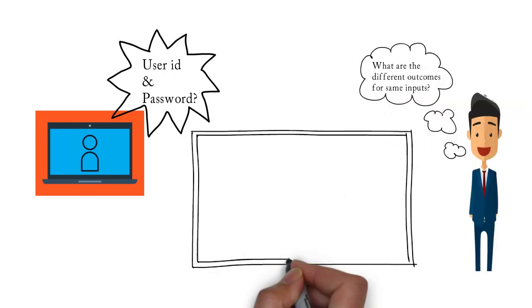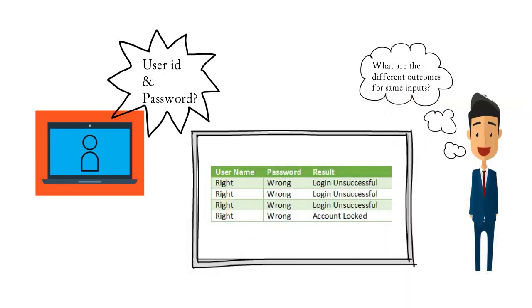If the customer enters the wrong password four times, the system shows the message 'account is locked.' In the first, second, and third instances of a wrong password, the system shows the message 'login is unsuccessful due to wrong input.' But the fourth time the customer enters a wrong password, the account will be locked. Here the same set of inputs results in different behavior from the system. With a state transition table we can derive all possible combinations of test conditions.